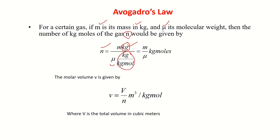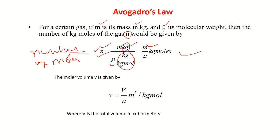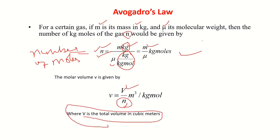When kg cancels, you get kg moles. So the number of moles equals mass divided by molecular weight. If you know the mass of a gas and its molecular weight, you can divide to get the number of moles. Molar volume is the total volume divided by the number of moles, in units of meter cube per kg mole. Please remember: the number of moles equals the mass of the substance divided by its molecular weight.